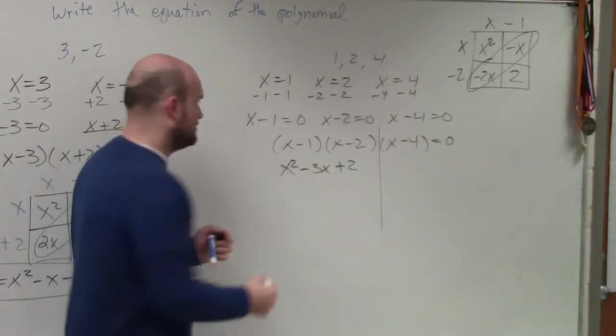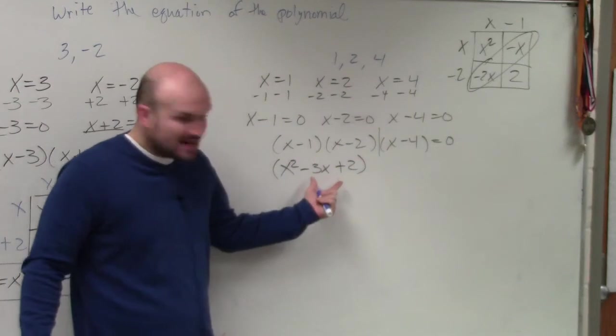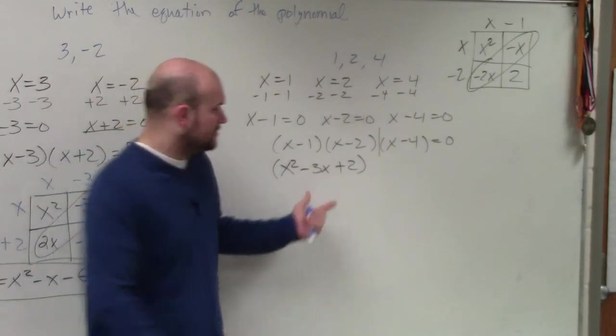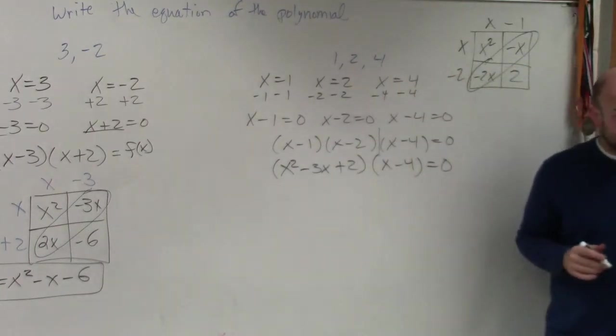But what I'm going to do is I'm going to leave these in parentheses. Because now, this is what these two multiplied give you x squared minus 3x plus 2. And that's times x minus 4 equals 0.